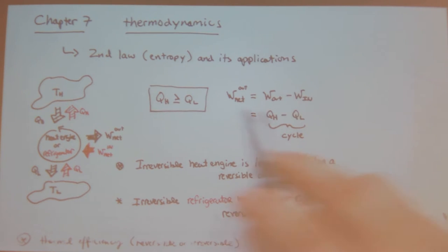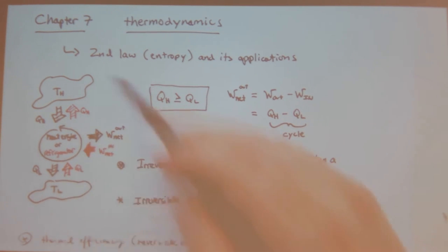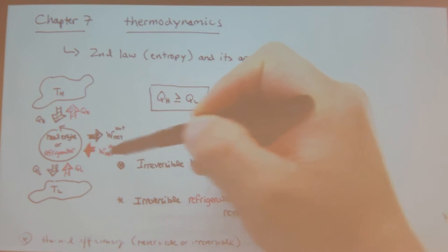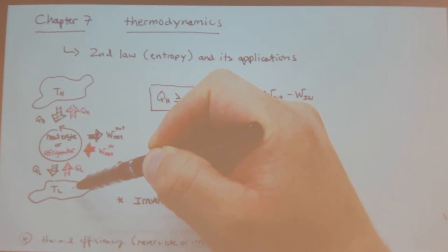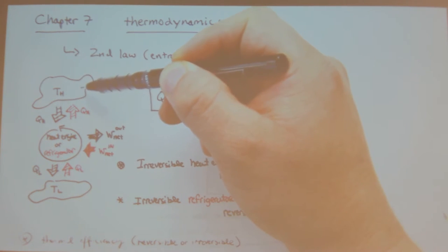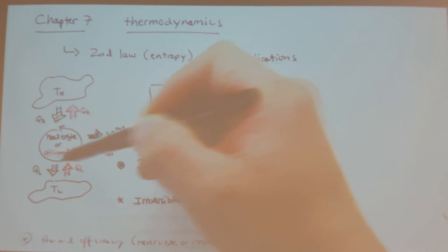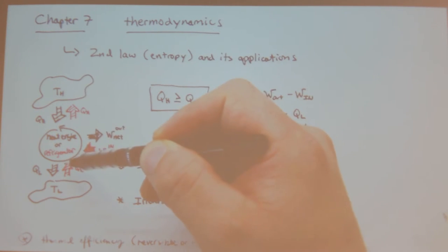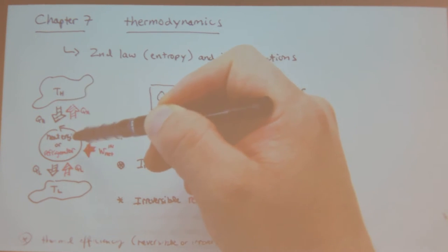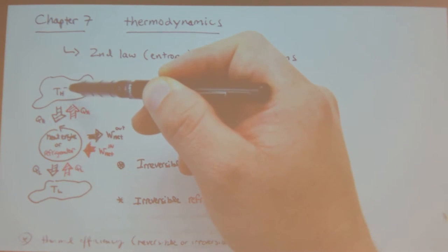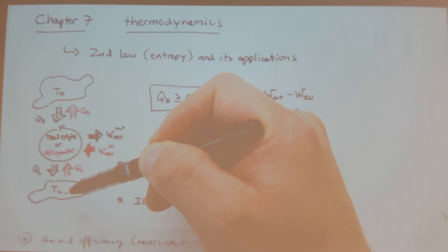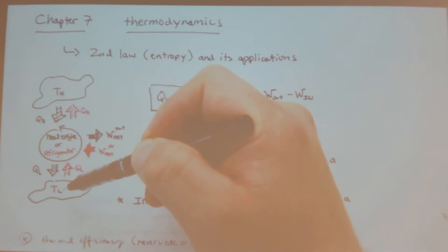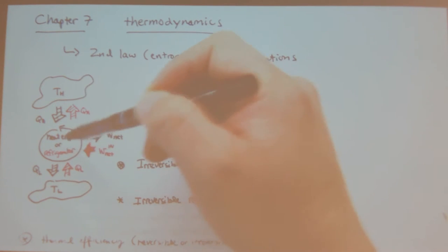Second law — entropy and its applications. We already talked about heat engines and refrigerators. A refrigerator takes work in, cools my steak, and rejects heat to the house — it works in a cycle. A heat engine produces work out based on a high-temperature source and a low-temperature sink, and also works in a cycle.